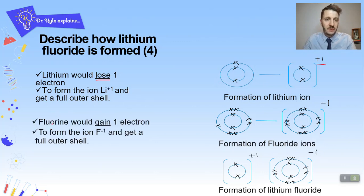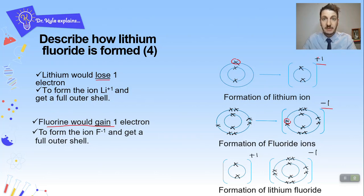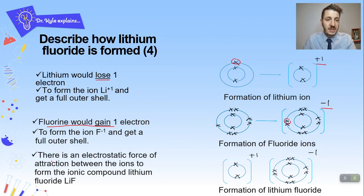Next, fluorine would gain an electron — it has seven electrons in the outer shell and gains that extra electron from the lithium atom, forming fluoride. It now forms a negative ion, so we have a positive and a negative ion. It gets a full outer shell. There is then an electrostatic force of attraction between the ions to form the ionic compound lithium fluoride.